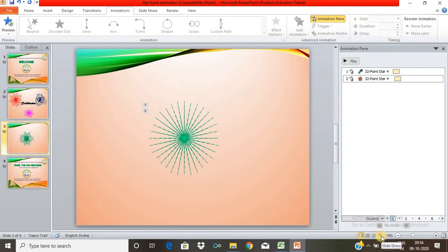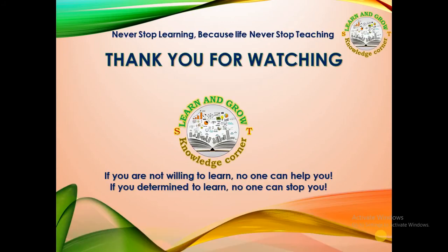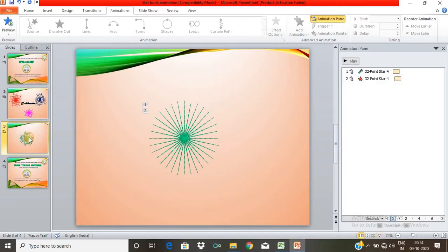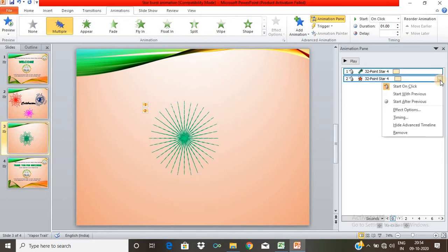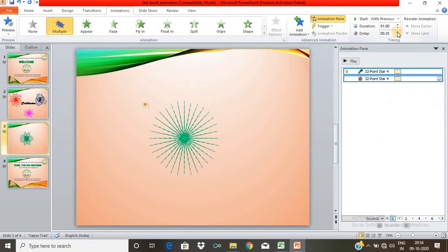You can see the animation. You can see the animation just one time. You can see the properties. Start with Previous — that is the Dissolve Out option — Start with Previous.